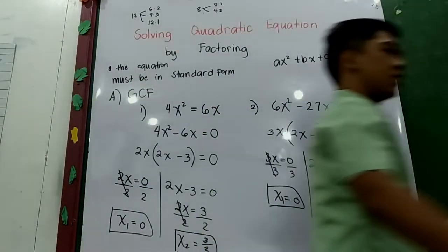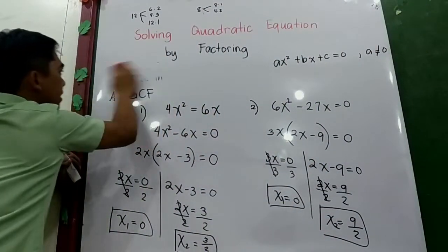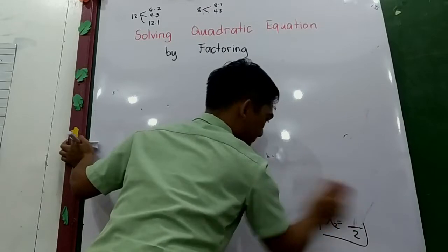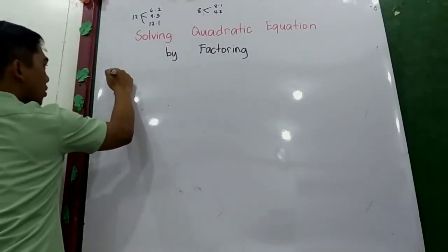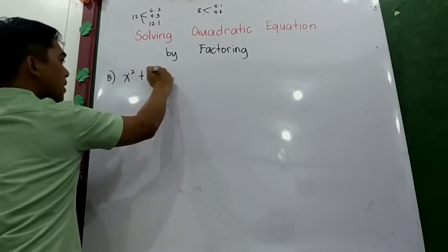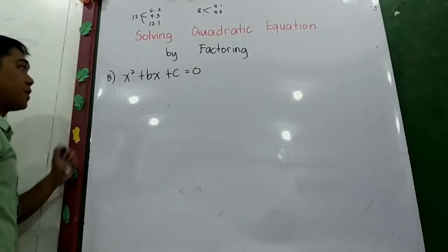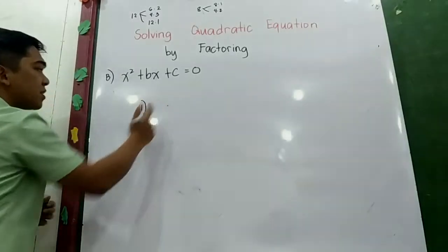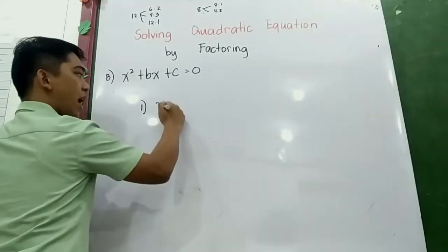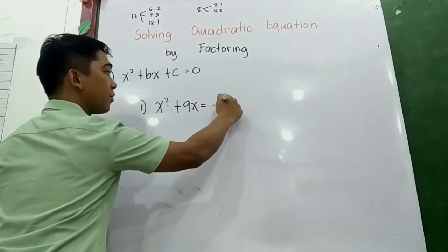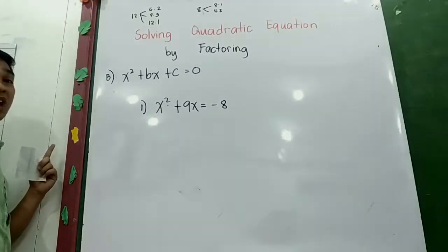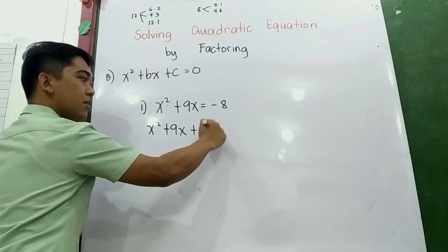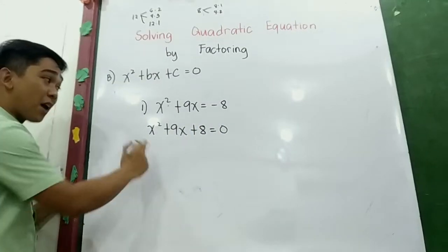The second technique is factoring in the form of x² + bx + c = 0, where the value of a is 1. Let's try number one: x² + 9x = −8. First step, write it in standard form by transposing: x² + 9x + 8 = 0. Now factor out.